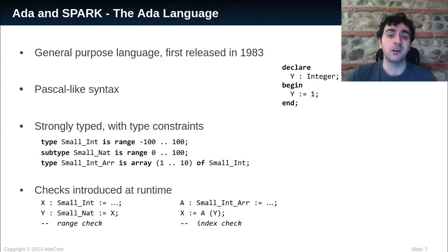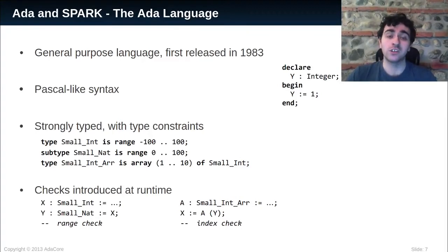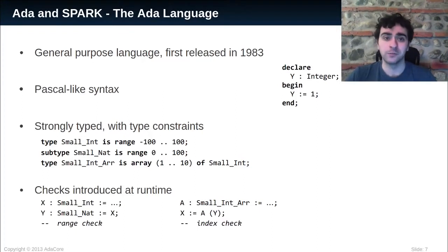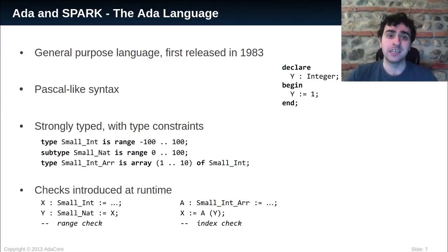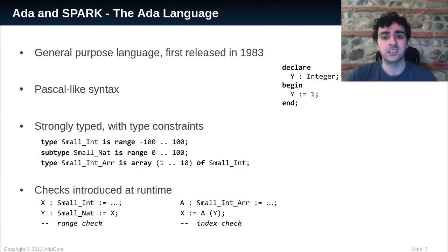These types and constraints are associated with checks mandated by the language. If I assign a value x to y, which is of type SmallNat, there will be a range check to ensure that x is in the correct range, here between 0 and 100. If I access a value in an array, an index check will be performed to ensure that the called index is in the bounds of the array. These checks are performed either at compile time if the values are statically known; otherwise, the compiler will insert code to perform those checks at runtime.